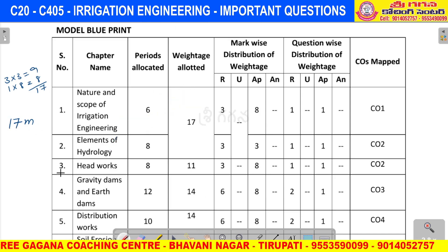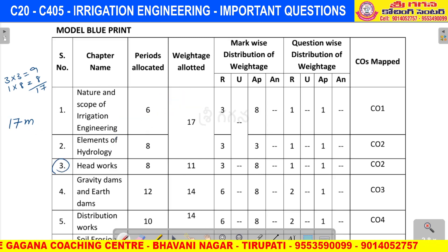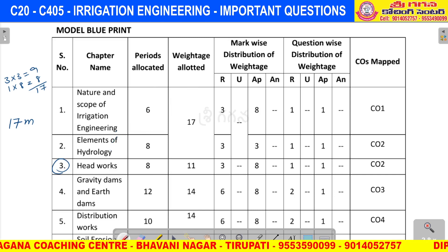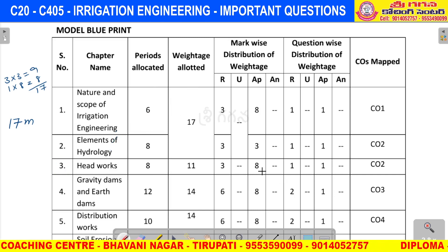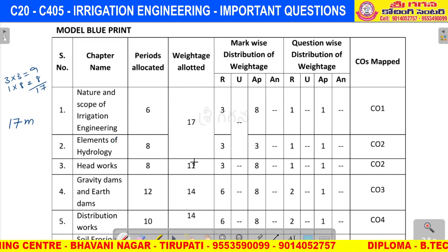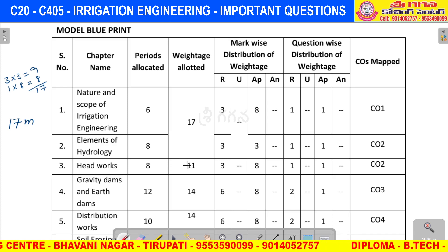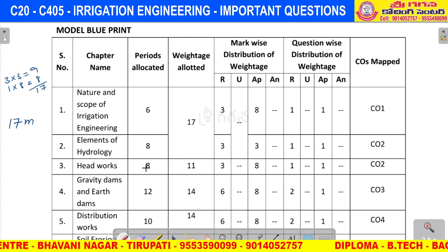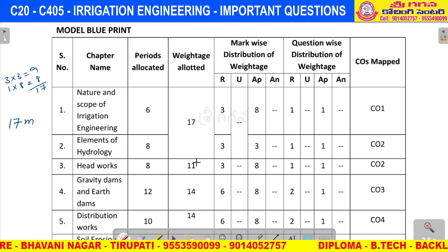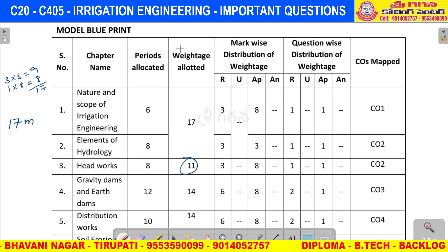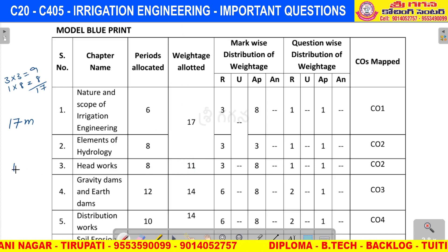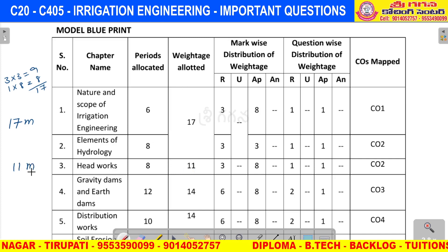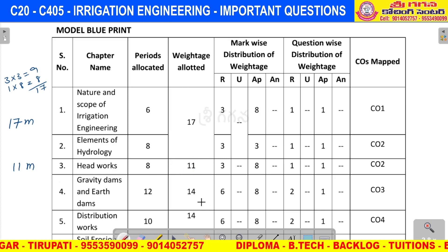Next, the third unit. The third unit gives us one short answer, so 8 plus 3 equals 11 marks total for the third unit.